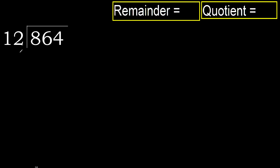864 divided by 12. 8 is less than 12, therefore next — 86 is not less.